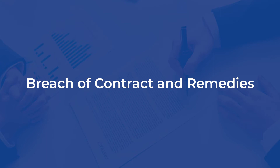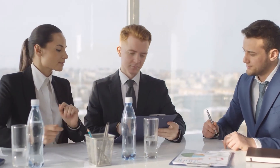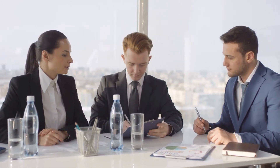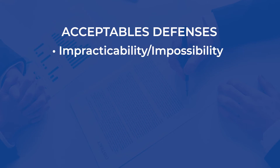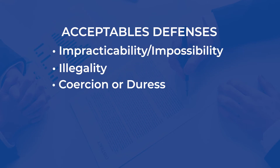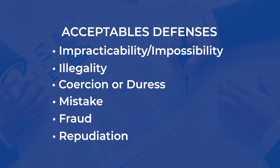We also spent time talking about defenses to a breach of contract. Not every contract can be fulfilled, and in some cases a party has a valid reason for their failure to comply. Some of the acceptable defenses to a breach are: impracticability/impossibility, illegality, coercion or duress, mistake, fraud, and repudiation.